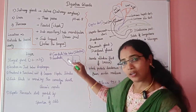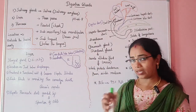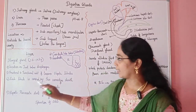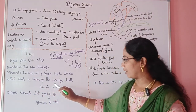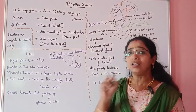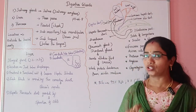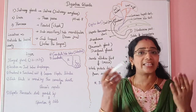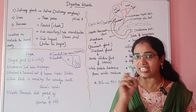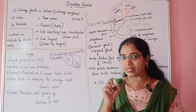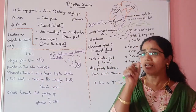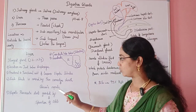If you look at the right lobe or left lobe, each lobe is covered by a thin connective tissue called Glisson's capsule. The liver is the largest gland in the body.